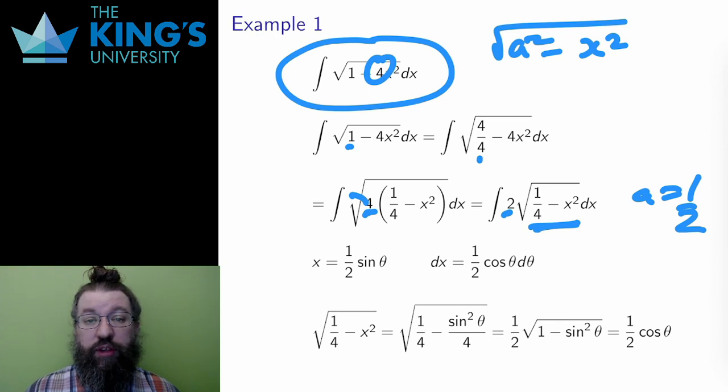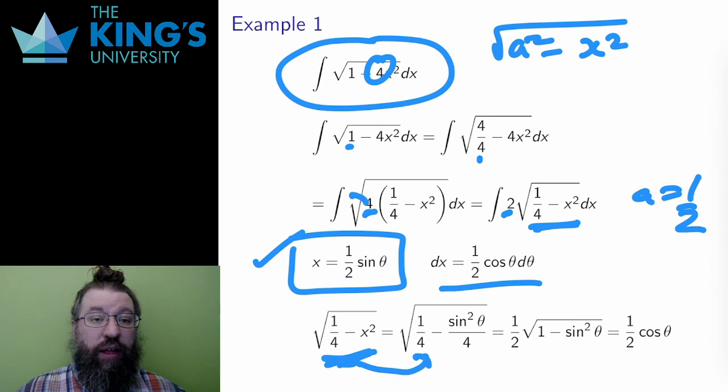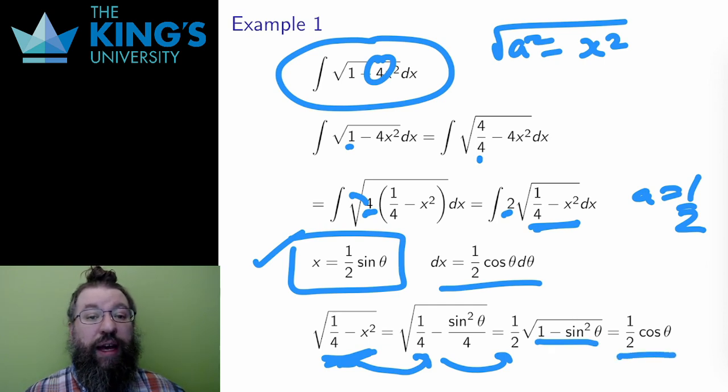The trig substitution for this pattern, a squared minus x squared, is x equals 1 half sine theta, so that dx is 1 half cos theta d theta. In the substitution, I'll also work out what happens to the square root term. It will become 1 quarter minus sine squared theta over 4, and I can factor the 1 quarter out, then use the trig identity sine squared plus cos squared equals 1 to turn this into 1 half cosine theta.